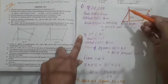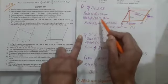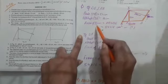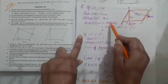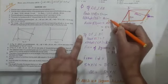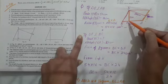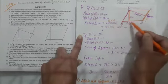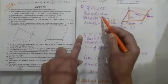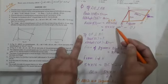DE is perpendicular to AB, so AB is the base and DE is the altitude. Area of parallelogram ka formula lagayenge — base into altitude. Base kya hai AB aur altitude kya hai DE. Values fill karo: AB ki value 54 cm, DE ki value 16 cm, so area = 54 × 16 cm².